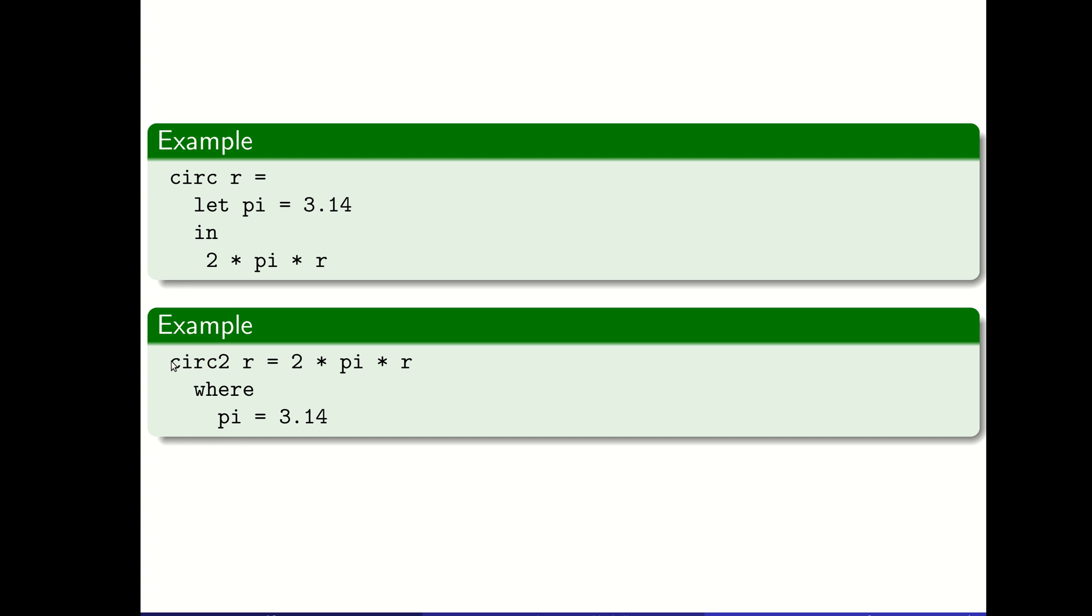Here, we say circumference 2 of r equals 2 times pi times r. Then with the where statement, we go back and say pi was supposed to be 3.14. It allows us to define it after the fact. The where statement is attached to this definition statement that's happening before it. Likewise, the where statement would be allowed to use the parameters of that function definition if it needed to.